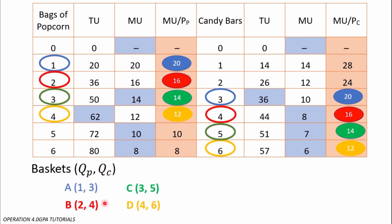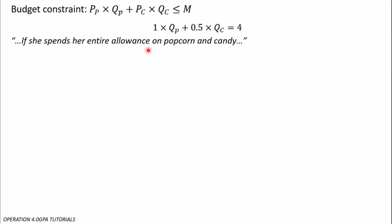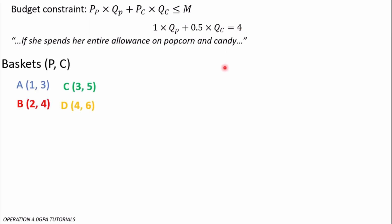Now, which of these will she consume per week? Utility deals with income and prices, so we use the income given and the prices of the goods to find which basket she can afford. We need a budget line: price of popcorn times quantity of popcorn plus price of candy times quantity of candy should be less than or equal to her income. Her budget equation is: 1 × Qp + 0.5 × Qc = 4, because the question asks that she spends her entire allowance.